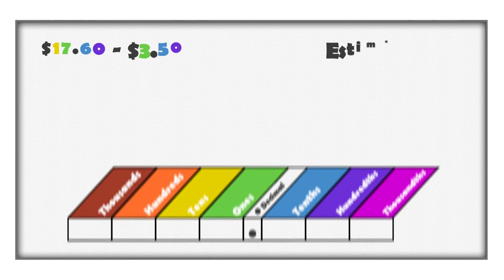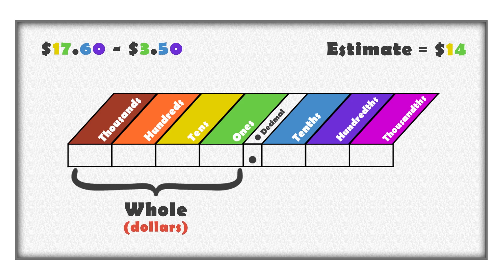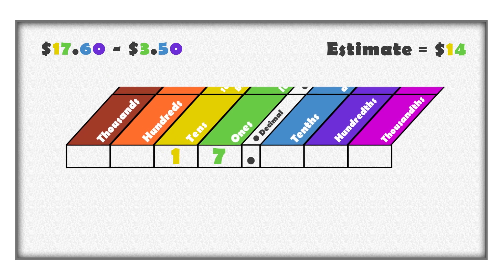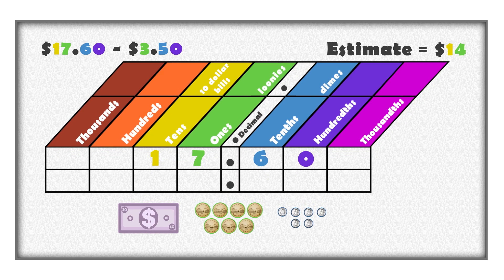We can also use a place value chart to help organize the digits when subtracting decimals. The dollar amounts, or whole, are to the left of the decimal point, and the cents, or part of a whole, are to the right of the decimal point. Fill the digits into the chart. $17.00 is one $10.00 bill and seven loonies — there is one ten and seven ones. $0.60 is six dimes; a dime is one-tenth of a dollar, so there are six tenths. $3.50 has three loonies, or three ones; five dimes, or five tenths; and zero hundredths.